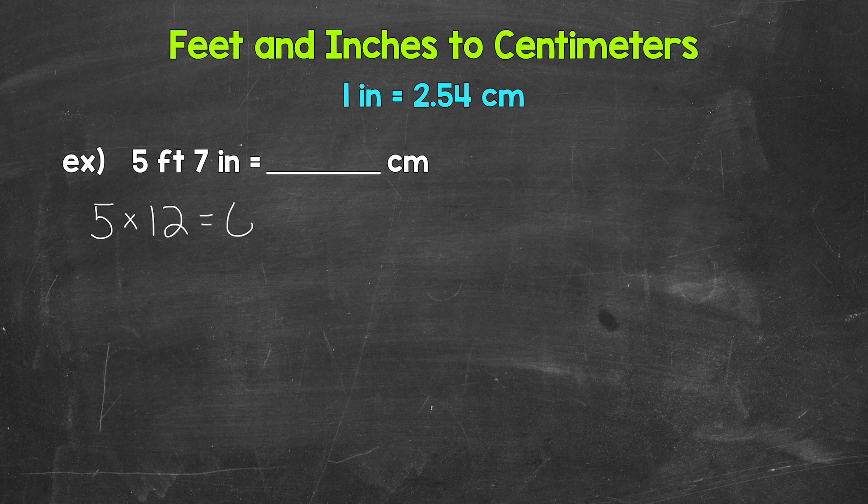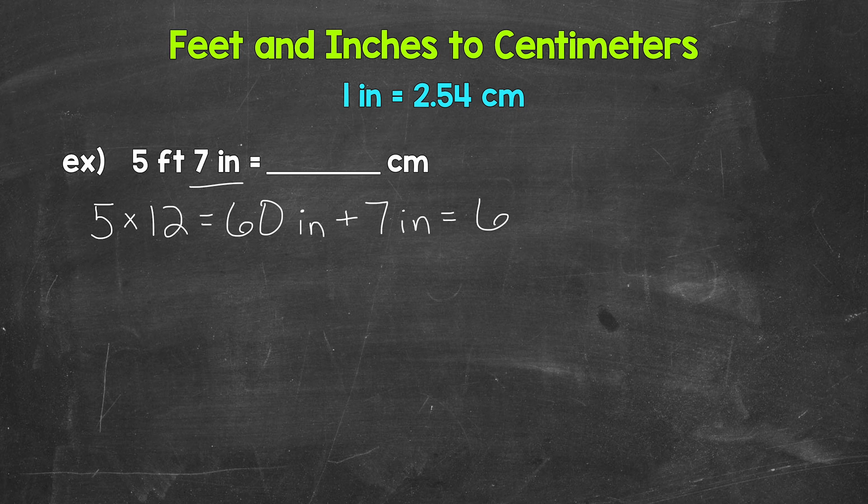That gives us 60. So 5 feet equals 60 inches. Now we add the 7 inches to the 60 inches. So 60 inches plus 7 inches gives us 67 inches.